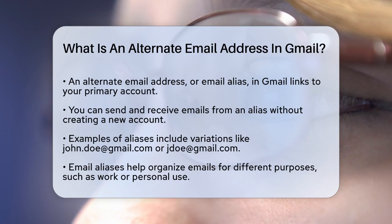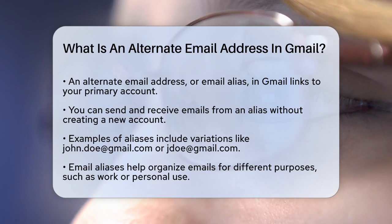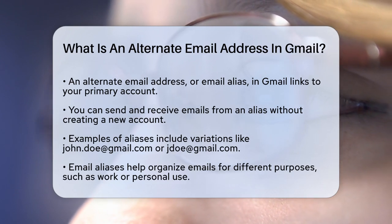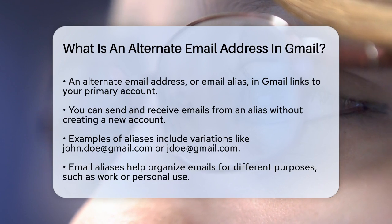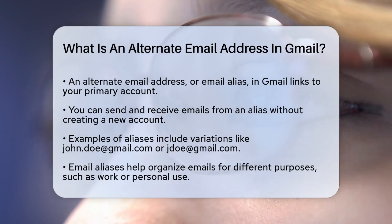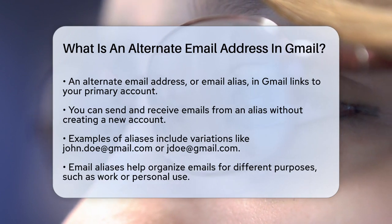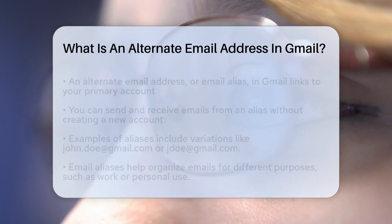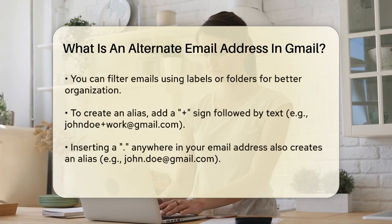For example, if your primary email address is john.doe@gmail.com, you can create an alias like jdoe@gmail.com, and all emails sent to these aliases will be delivered to your main inbox.